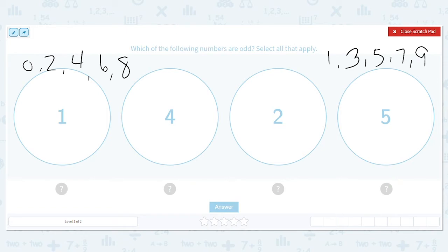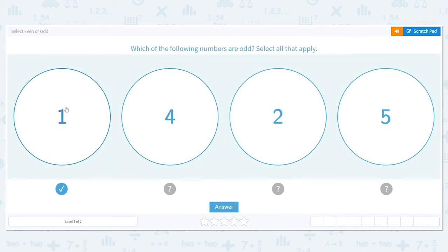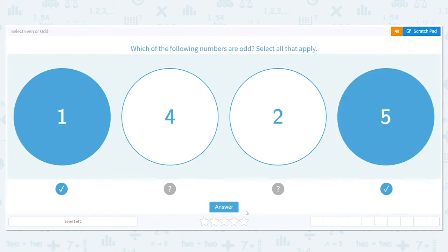So which of these numbers here are odd? These are my even for even Steven, and these are my odd for odd Todd. Okay, which are odd? One is odd. Is four? No, four is even. How about two? Two is also even. What about five? Five is odd. So one and five are odd.